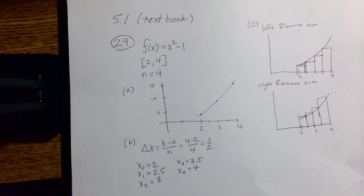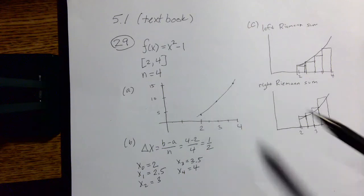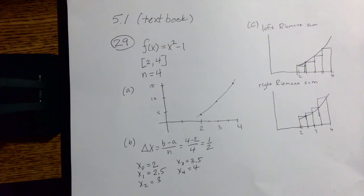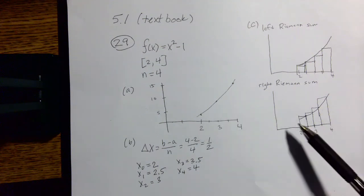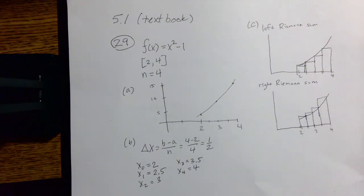This particular function is an increasing function, and with an increasing function the left Riemann sum will always underestimate and with an increasing function a right Riemann sum will always overestimate.